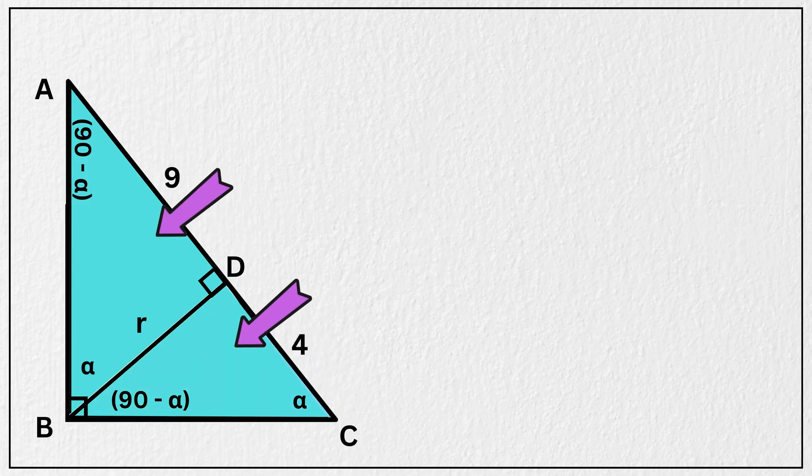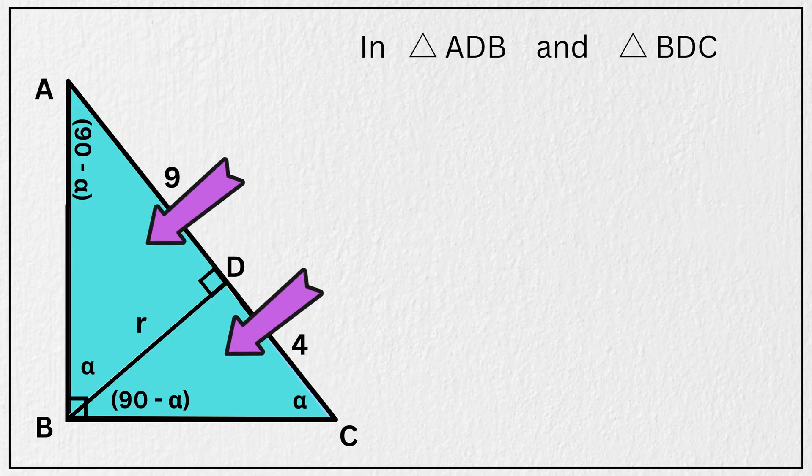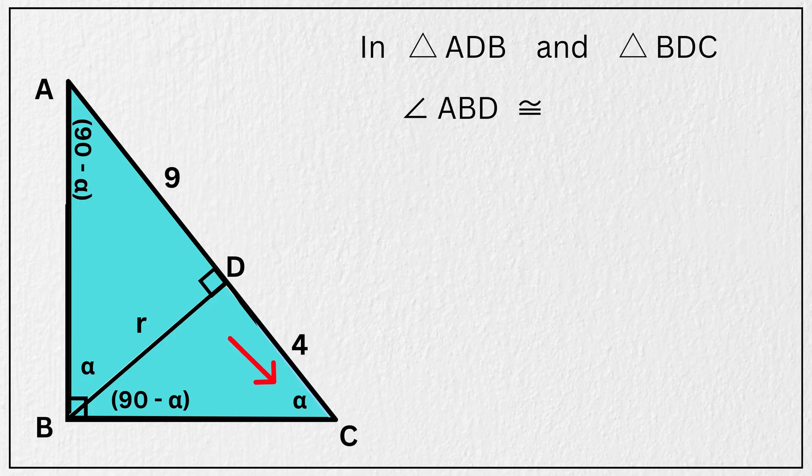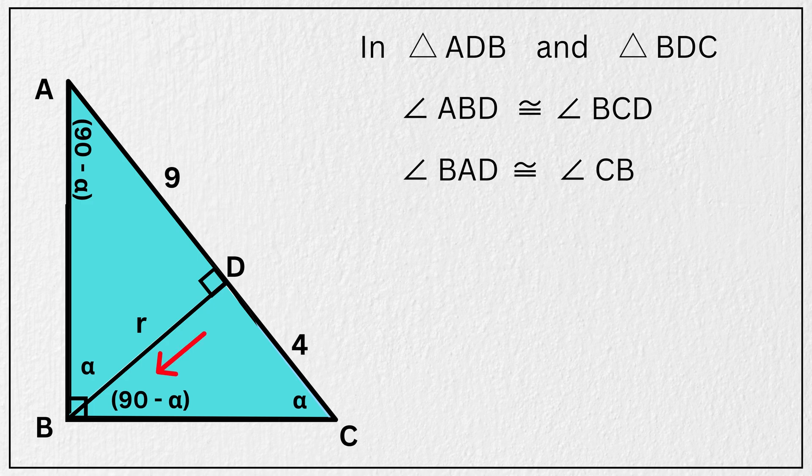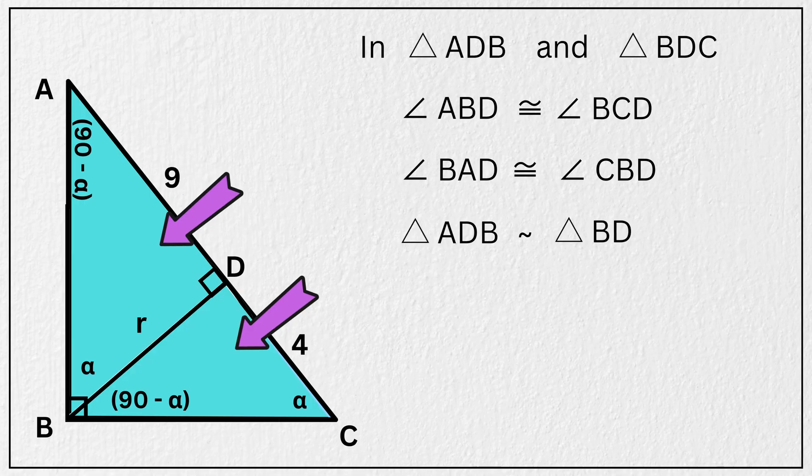Now let's focus on these two triangles, ADB and BDC, formed on either side of the radius. This angle of triangle ADB is equal to this angle of triangle BDC. And this angle of triangle ADB is equal to this angle of triangle BDC. That means these two triangles, ADB and BDC, are similar triangles by angle-angle similarity test.